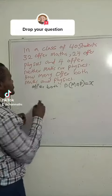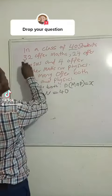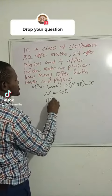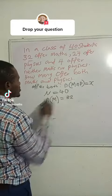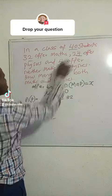So if that is the case, we have universal u is 40, that is from here. And 32 offer math, so number of students that offer mathematics is equal to 32. And number of students that offer physics is 24.